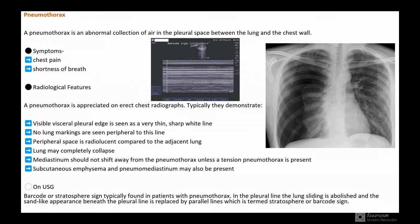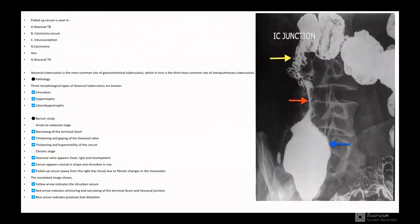On USG, barcode or stratosphere sign is typically found in patients with pneumothorax. The lung sliding is abolished and the sand-like appearance beneath the pleural line is replaced by parallel lines which is termed stratosphere or barcode sign.